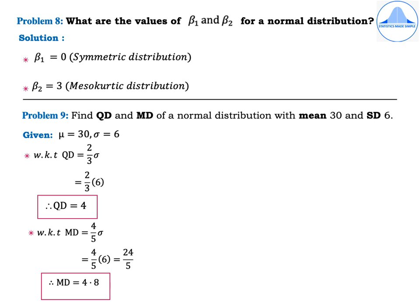Problem 9: Find the quartile deviation and mean deviation of a normal distribution with mean 30 and standard deviation 6. Given: mu = 30 and sigma = 6. The formula for quartile deviation is QD = (2/3)σ. Substituting sigma = 6, the quartile deviation QD = 4.